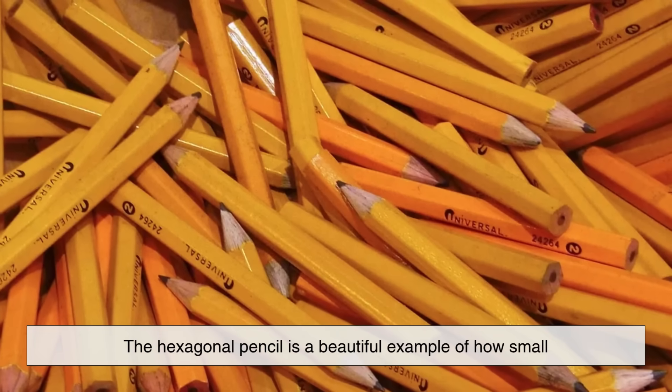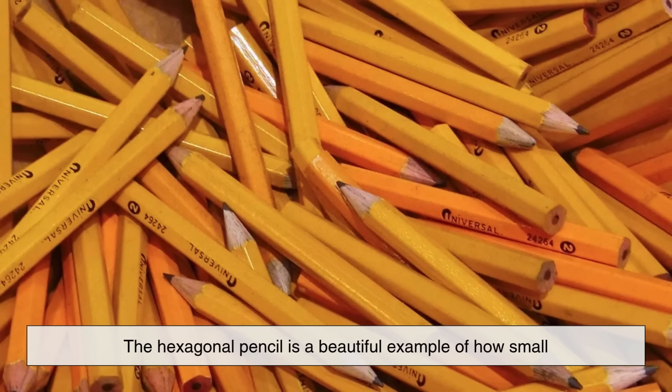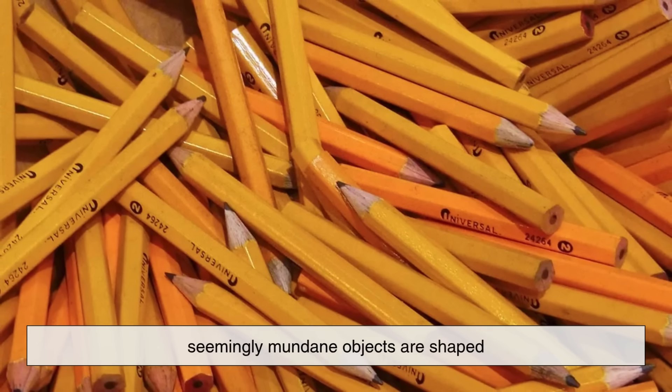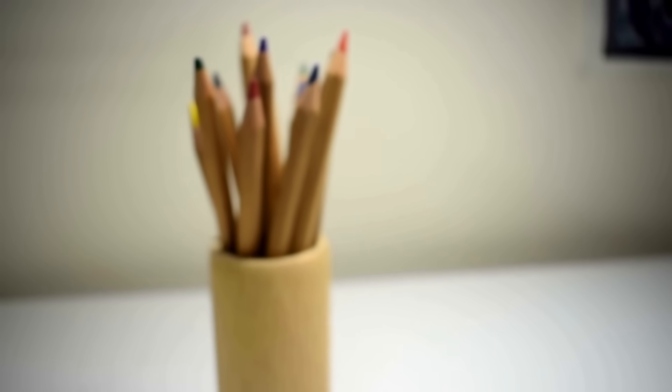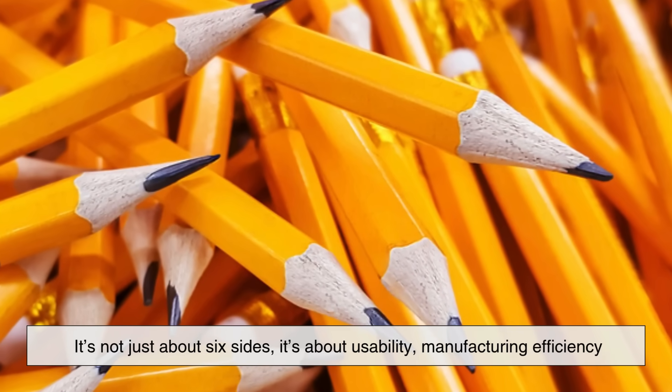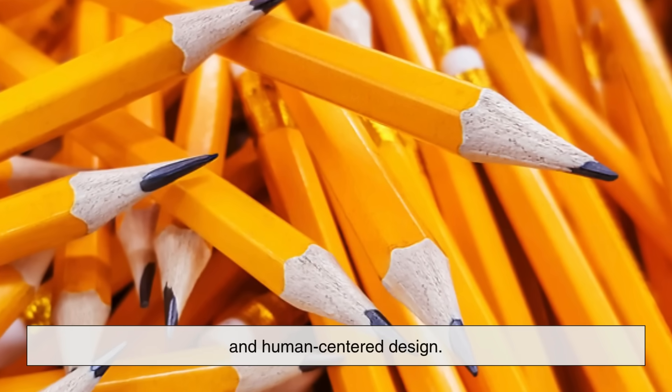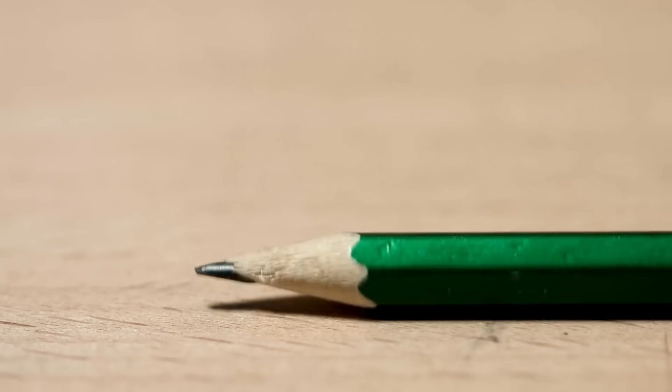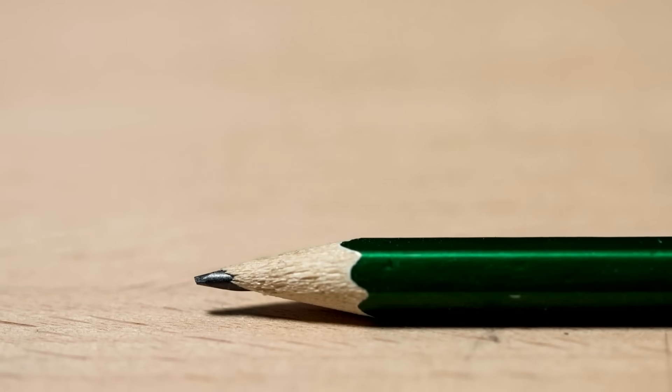In the end, the hexagonal pencil is a beautiful example of how small, seemingly mundane objects are shaped, literally and figuratively, by layers of history, economics, design, and user experience. It's not just about six sides, it's about usability, manufacturing efficiency, and human-centered design. We often think of innovation as flashy new tech or groundbreaking science, but sometimes the smartest solutions are the ones that sit quietly on your desk, ready to be picked up and used without a second thought.